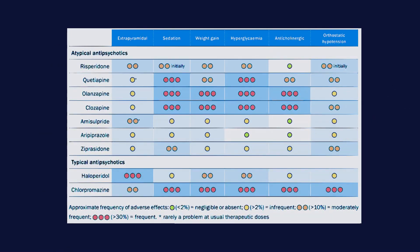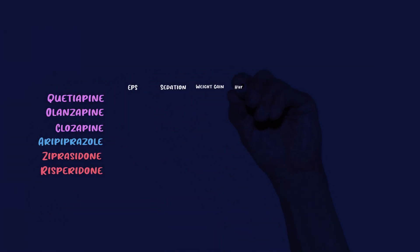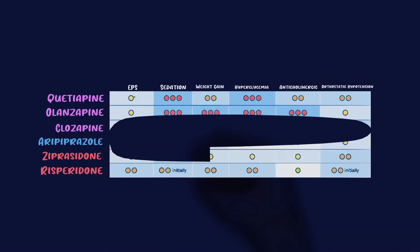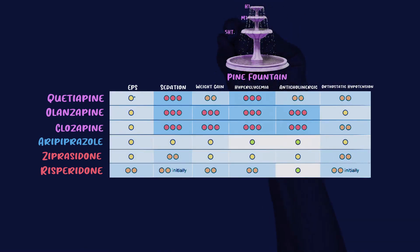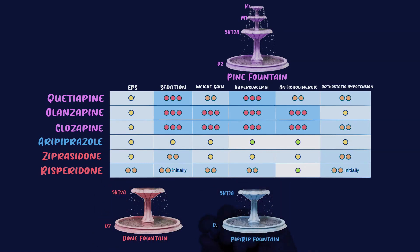Here's a random chart of antipsychotic side effects — I always found charts like this absolutely impossible to memorize. But once you know the pine, done, and pip-and-rip fountain, looking through this chart will be a piece of cake. I'm going to rearrange it in the order of pines, dones, and pips and rip. Once we take a look at the fountains showing the receptor profile backbones, this chart becomes very manageable.